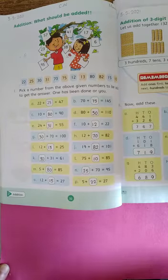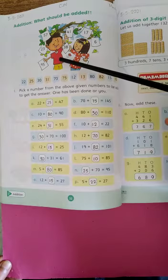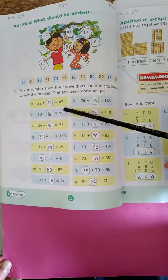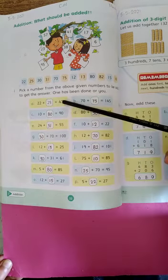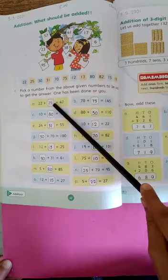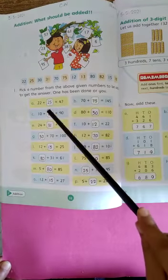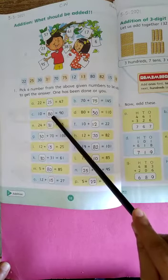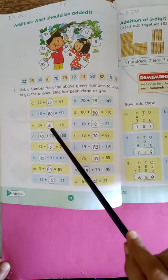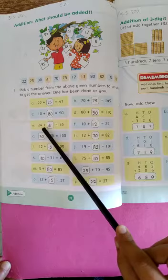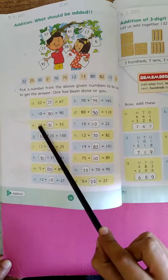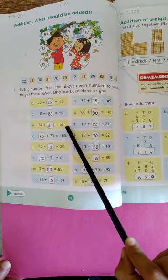Okay, now yehaan bhi two students hai. Yeh two kids hai. The girl has ten plus eighty.